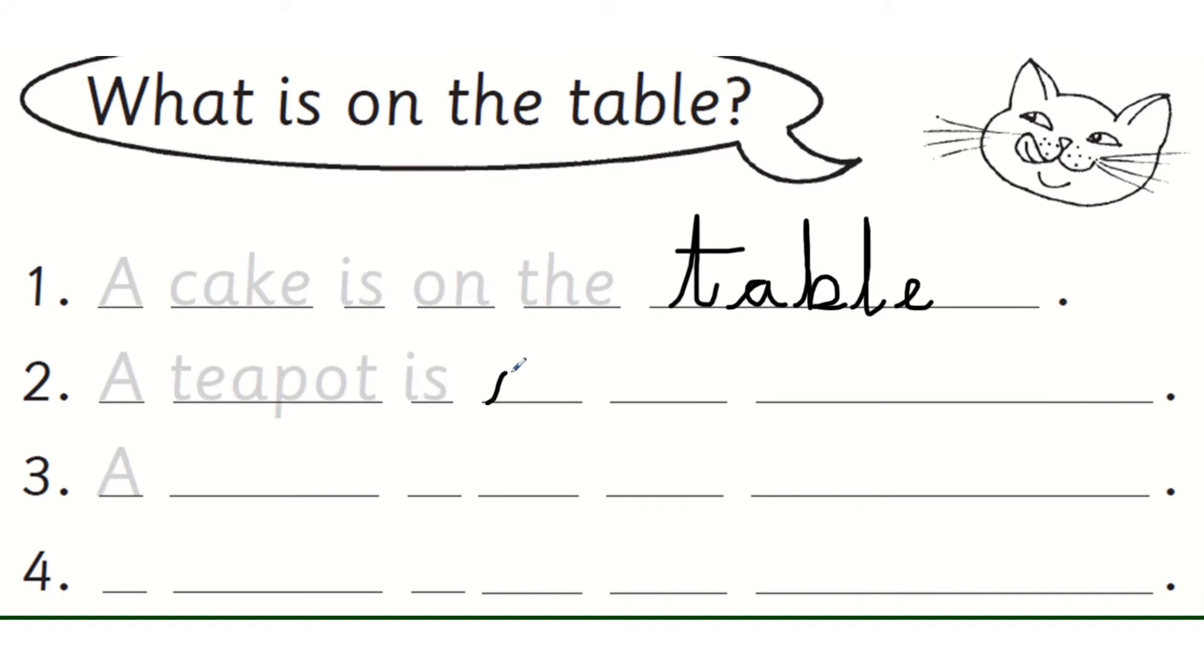So you will write on. Remember that top join for the O? On. And then you can finish the sentence. A teapot is on the table.